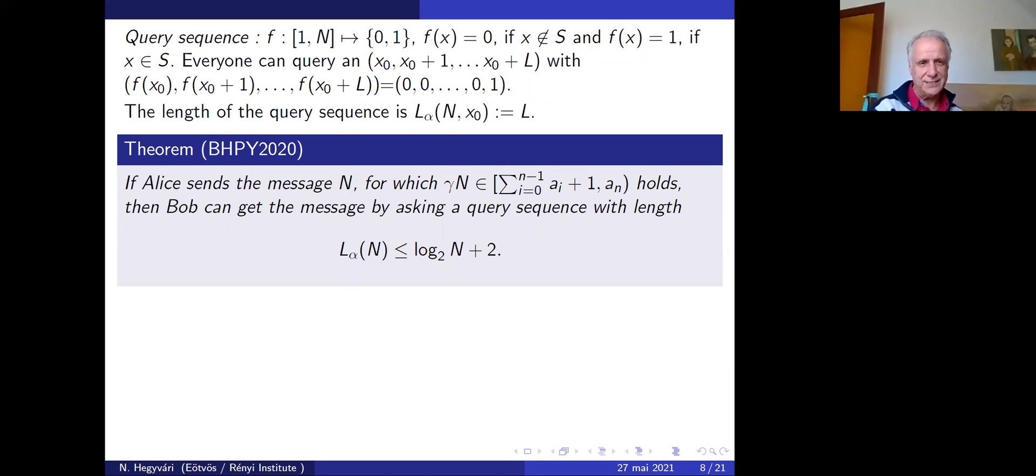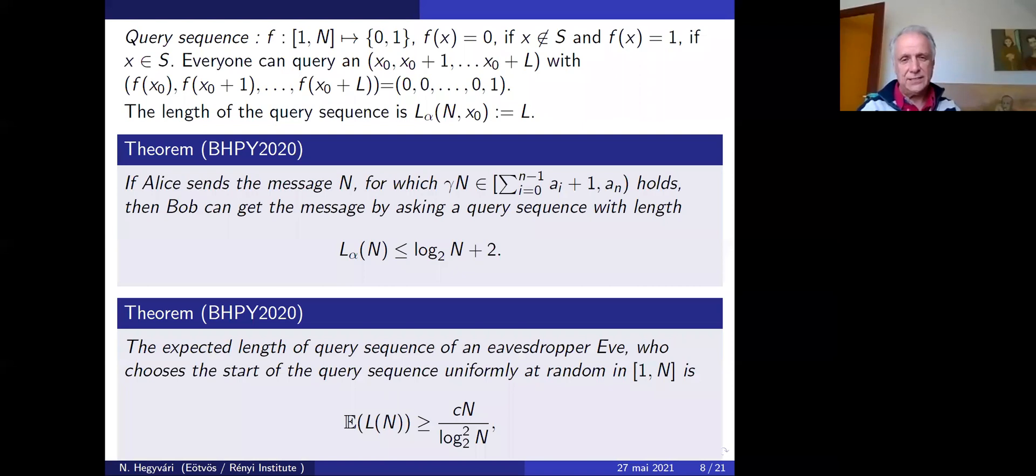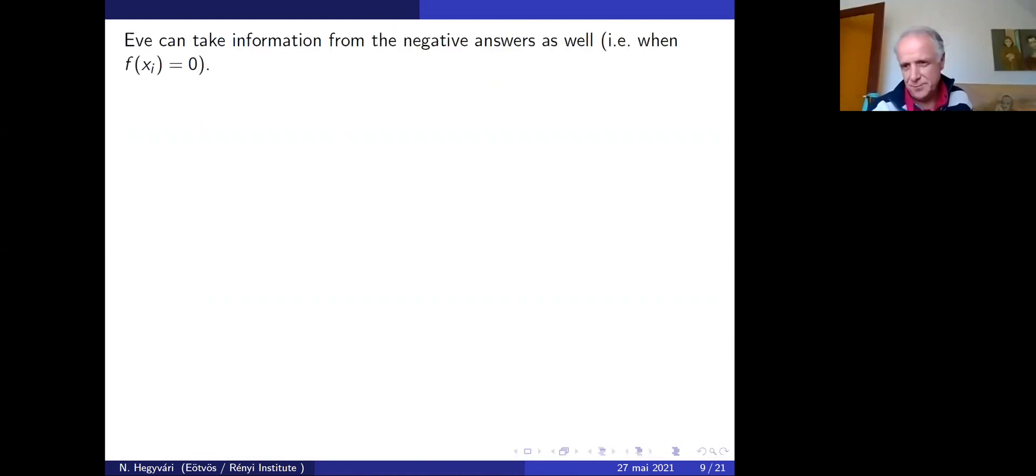With my students, we prove the following theorem: if Alice sends the message N in the specified interval for γ, then Bob can get the message completely with a query sequence of length at most log₂(N) + 2. On the other hand, if there is an eavesdropper Eve trying to find the message, she has a hard job because the average query length is constant times N/log²(N).